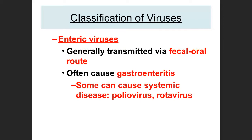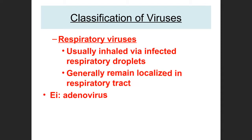Enteric viruses are transmitted via the fecal-oral route — essentially through food or drink — and go through the gastrointestinal tract. They often cause gastroenteritis but not always. For example, poliovirus is transmitted fecal-orally but causes a systemic, nervous system infection, while rotavirus causes a purely GI infection. Respiratory viruses are transmitted via respiratory droplets and generally remain within the respiratory tract — adenovirus is one example.